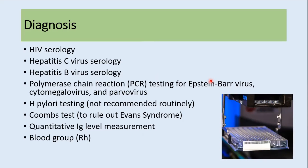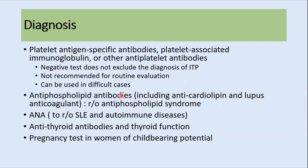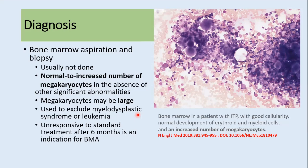Other tests are done to rule out secondary causes of ITP or other causes of thrombocytopenia. These include HIV serology, hepatitis C serology, hepatitis B serology, PCR for Epstein-Barr virus and parvovirus, H. pylori testing, Coombs test to rule out Evans syndrome, immunoglobulin levels, blood grouping, and antiphospholipid antibodies to rule out antiphospholipid syndrome. ANA to rule out SLE, antithyroid antibodies, and pregnancy testing in women of childbearing potential should also be performed.